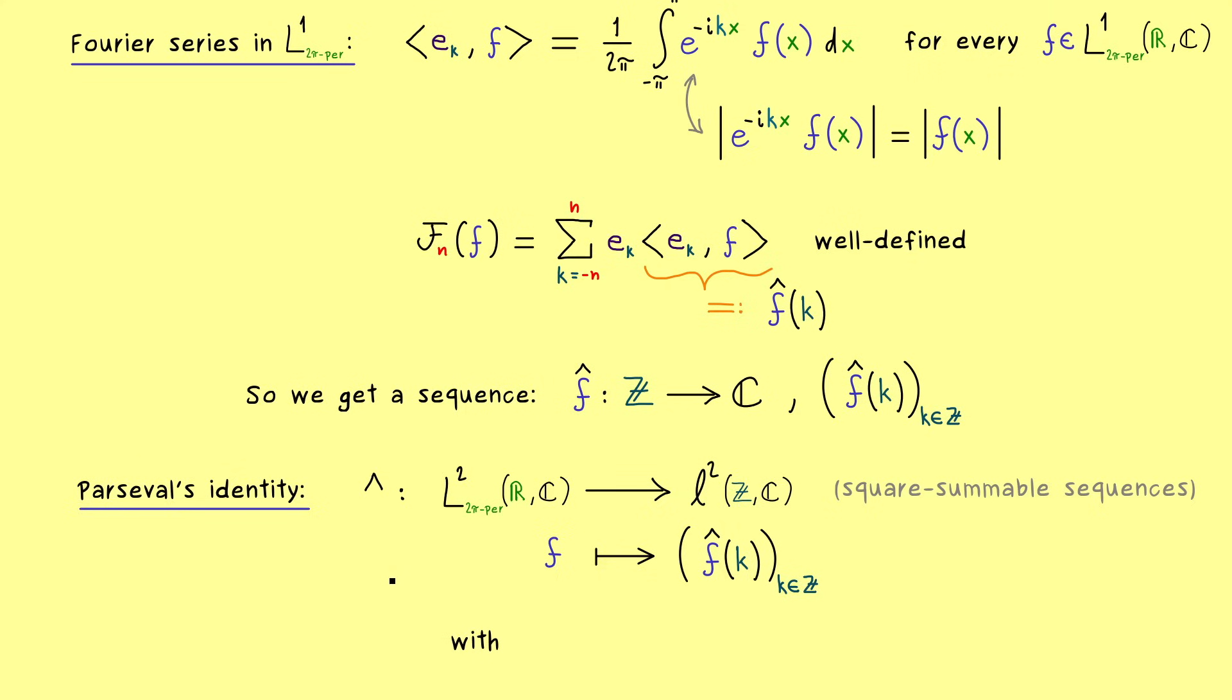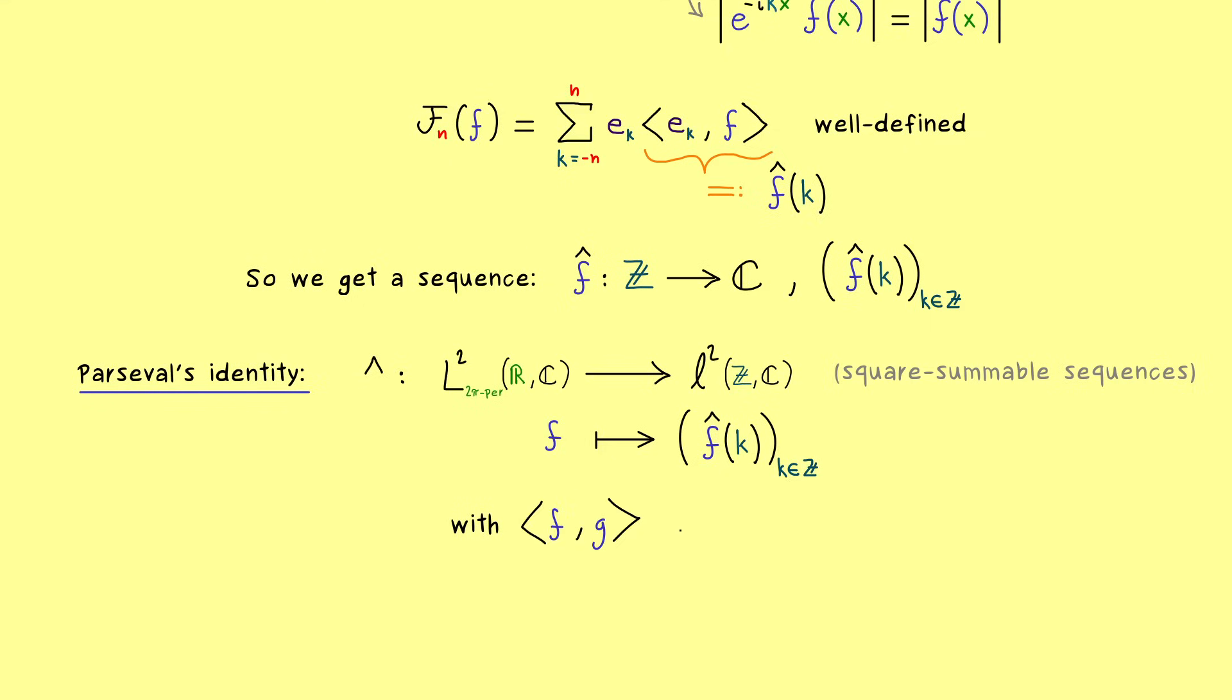Indeed it tells us even more because it also says what happens with the inner product. Namely if you want to calculate the inner product f with g you can put in our orthonormal system. Which means we have the convergence of this series given by the Fourier coefficients. Which also means we can shorten it with the hat notation. And there please note the first entry is just the complex conjugate of f hat. And now actually what we find there is exactly the inner product we have in our lowercase l2. Indeed it's exactly the same idea as the inner product in the integral sense.